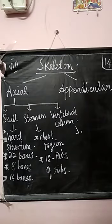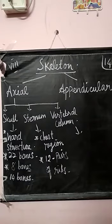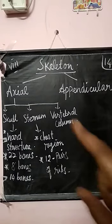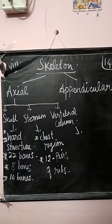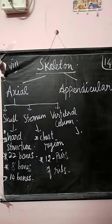The axial skeleton consists of bones along the axis of the human body. It consists of three main parts: the skull, the sternum or ribcage, and the vertebral column.